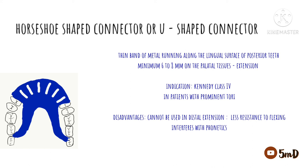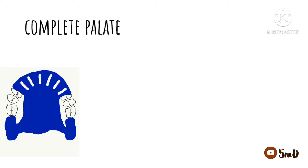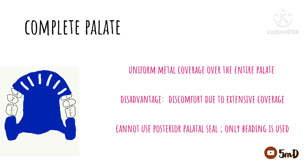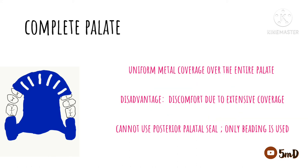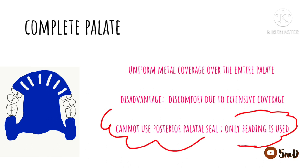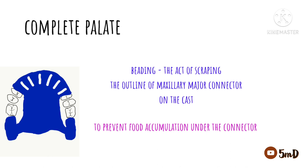The final type is the complete palate. A uniform metal cover extends over the entire palate. Since it covers the entire palate, there is obviously a certain degree of discomfort, though it is indicated in distal extension cases. The problem is that we cannot apply a posterior palatal seal here — only the effect of beading can be used. Beading is done along the posterior border of the maxillary major connector to prevent food accumulation beneath the denture base.